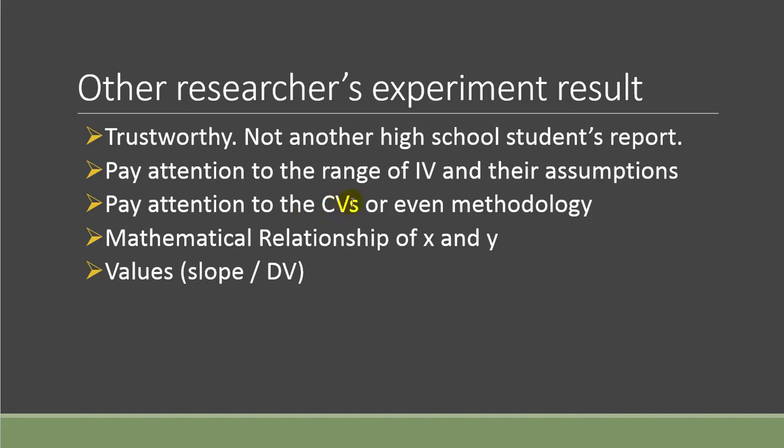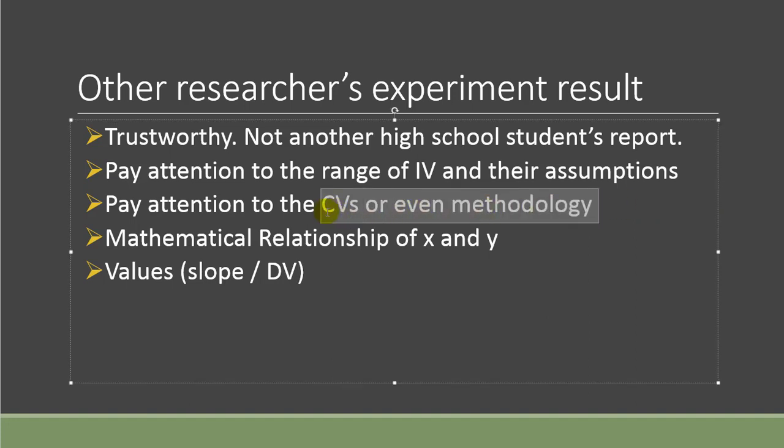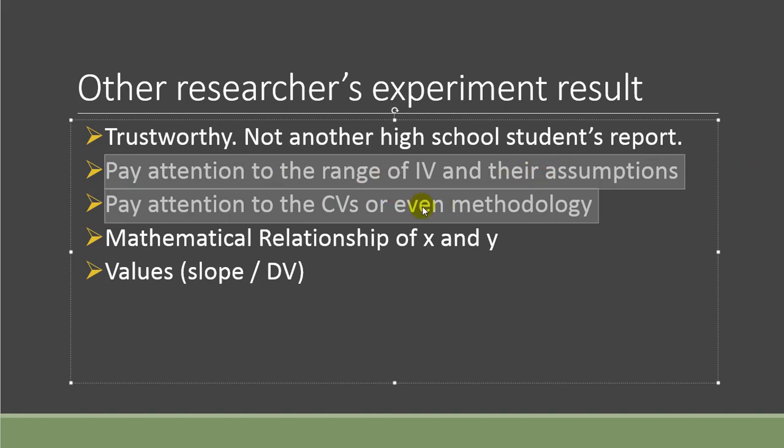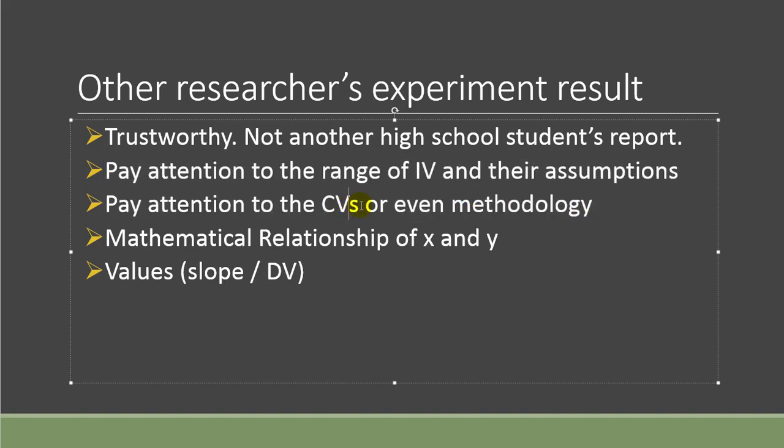The second thing you should pay attention to is the range of their independent variable - it should cover yours. Usually they do wider because they're more resourceful. Also pay attention to their assumptions. Maybe there are things they assumed and you don't or vice versa, and that's worth discussion. The third thing is the control variable - maybe you're using a different size. That may bring an effect, or even the methodology itself is different. These are not saying if you have different assumptions or control variables you cannot use it. The research question should be similar or close and relevant, but maybe some of these make a difference. How do you justify how you compare those differences? And rule out maybe that would make a difference also.